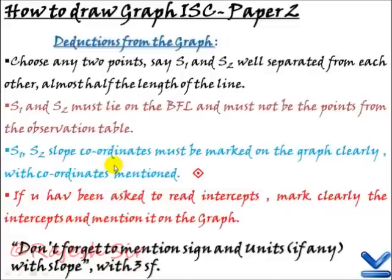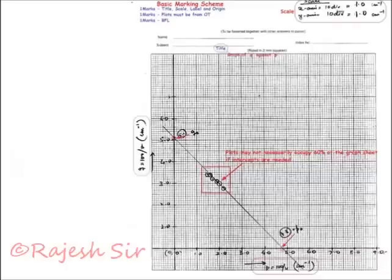Now, S1 and S2 coordinates must be marked on the graph clearly with the coordinates mentioned and probably if it is possible for you to highlight this point like this, do that. If you have been asked to read the intercept, mark the intercepts clearly on the graph. Okay, do mention those coordinates of those intercept. Don't forget to mention the sign and the unit if any you are getting with the slope and this slope must be calculated correct up to three SF. It should be correct up to three significant figures. Take care of these points guys and I'm sure you are going to rock your practical examination.